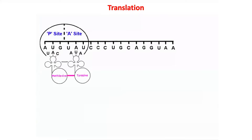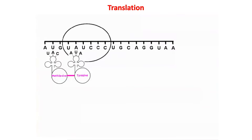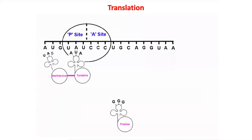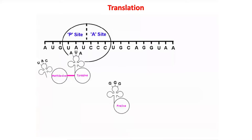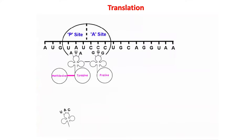A peptide bond is formed between the first two amino acids. The tRNA in the P site is no longer required because its amino acid is attached to the amino acid on the second tRNA by the covalent peptide bond. The ribosome then moves along the mRNA by one codon, placing the second tRNA in the P site. The first tRNA is freed, while a new tRNA with an anticodon matching the mRNA's next codon and carrying a specific amino acid joins the A site.